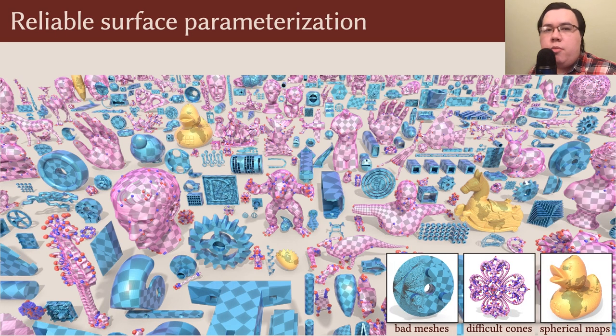We introduce a reliable algorithm for surface parameterization, which succeeds on low-quality input geometry shown in blue, and difficult cone configurations shown in pink. Furthermore, we also compute discrete conformal maps to the sphere, which we show in yellow.